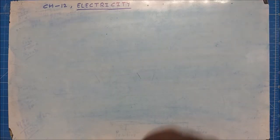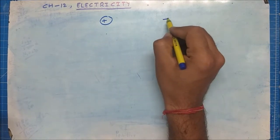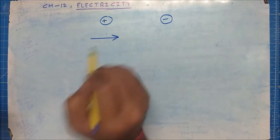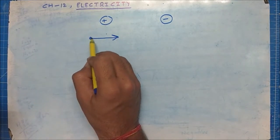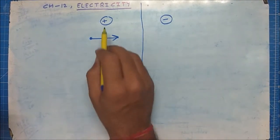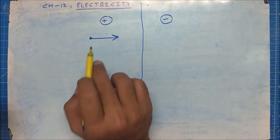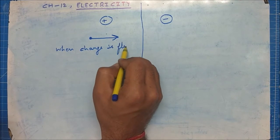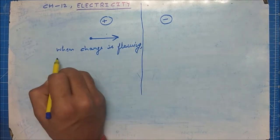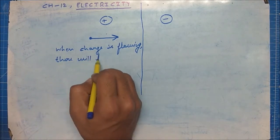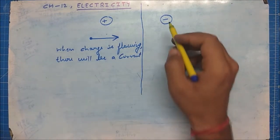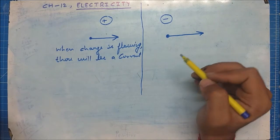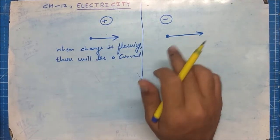We know that we have two types of charge: positive charge and negative charge. Now if charge flows — suppose positive charge is flowing in this direction — whenever charge is flowing there will be a current. Similarly, if we have a negative charge also moving in this direction, there will also be a current. Now what is the difference between these two currents?